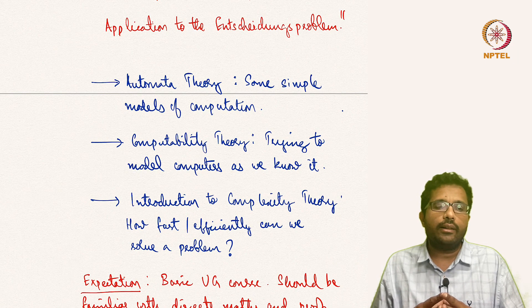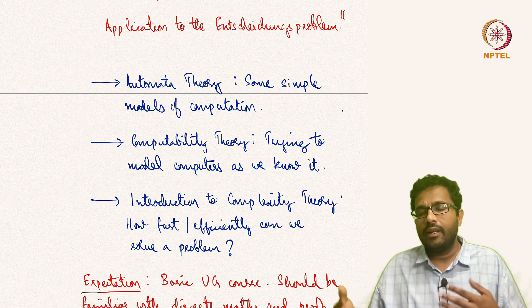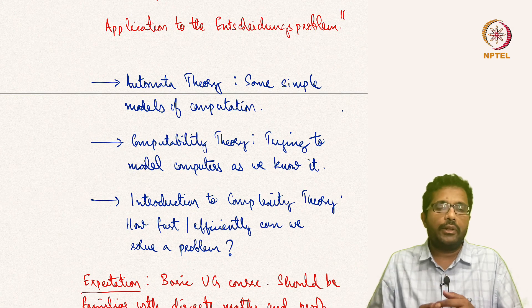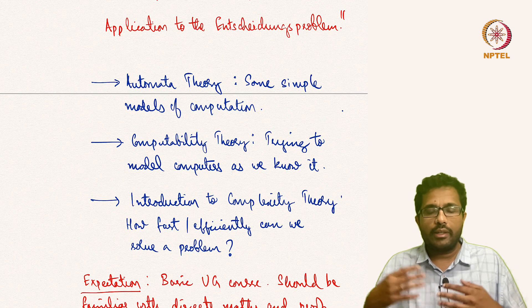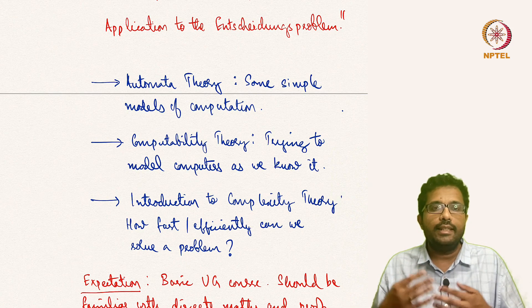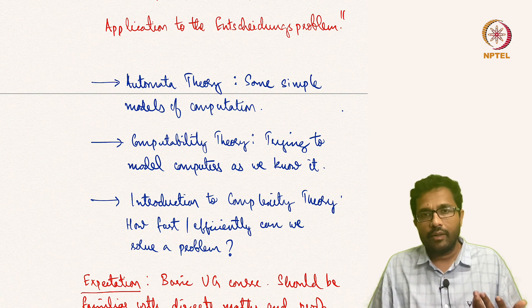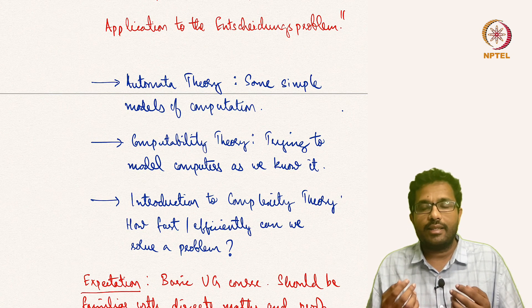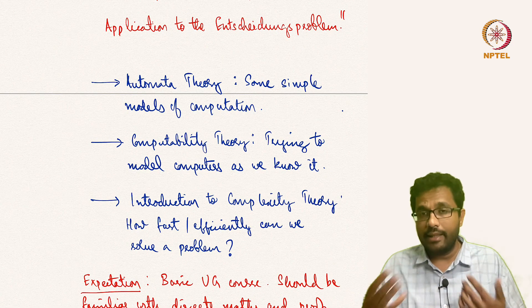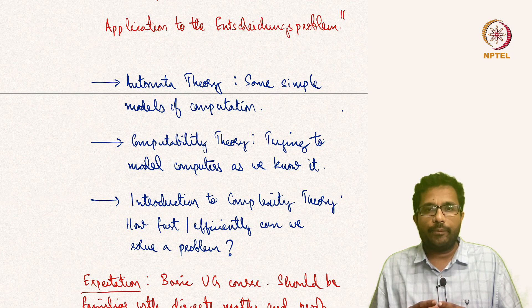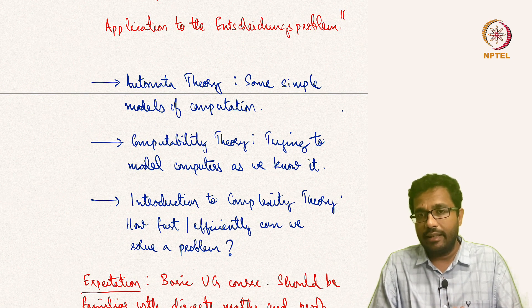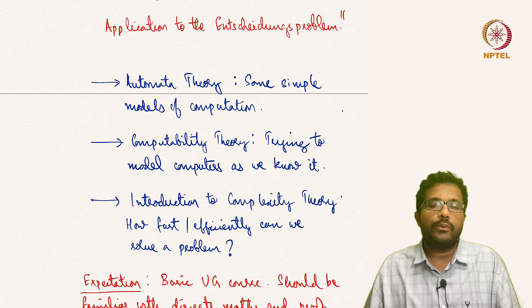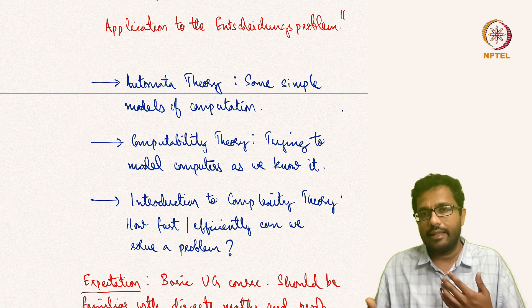Finally, we will come to complexity theory, where we deal with how fast or efficiently we can solve a problem. Suppose we are trying to find the shortest path from home to office — what is the fastest way? Two main resources one considers during computation are space, which is how much memory we use, and time, how quickly we get the answer. Complexity theory itself is a vast area and towards the end of this course we will briefly introduce this topic.